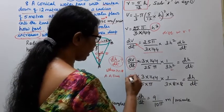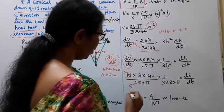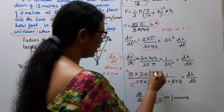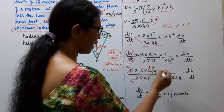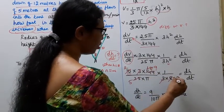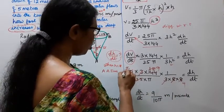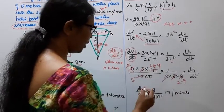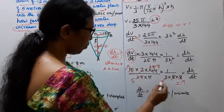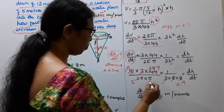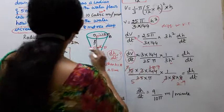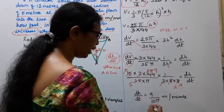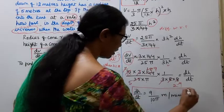Cancelling terms: 10 = (3 × 144) / (25π × 3) × h² × dh/dt. With h = 8, we cancel the 3s and simplify: 5 × 2 = 10, 5 × 5 = 25, and 8 with 144 simplify to give numerator 9. Therefore, dh/dt = 9/(10π) meters per minute. This is the answer.